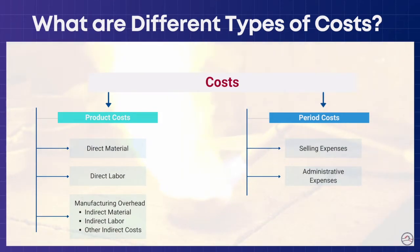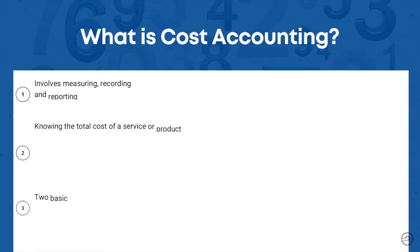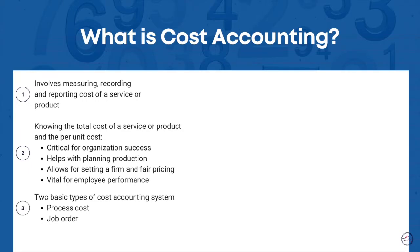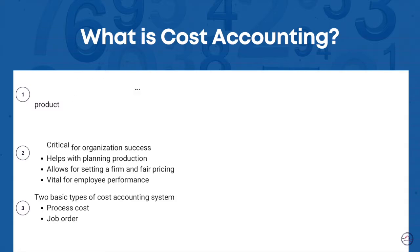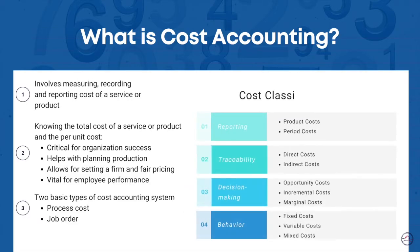Managers need to know how to measure, record, and report different types of costs. Knowing what they are can help make informed decisions, and understanding them helps one understand the true cost of an organization. Different organizations use different systems to account for costs, but the most commonly used ones are process and job order costing. Costs can also be classified in other ways for different purposes.